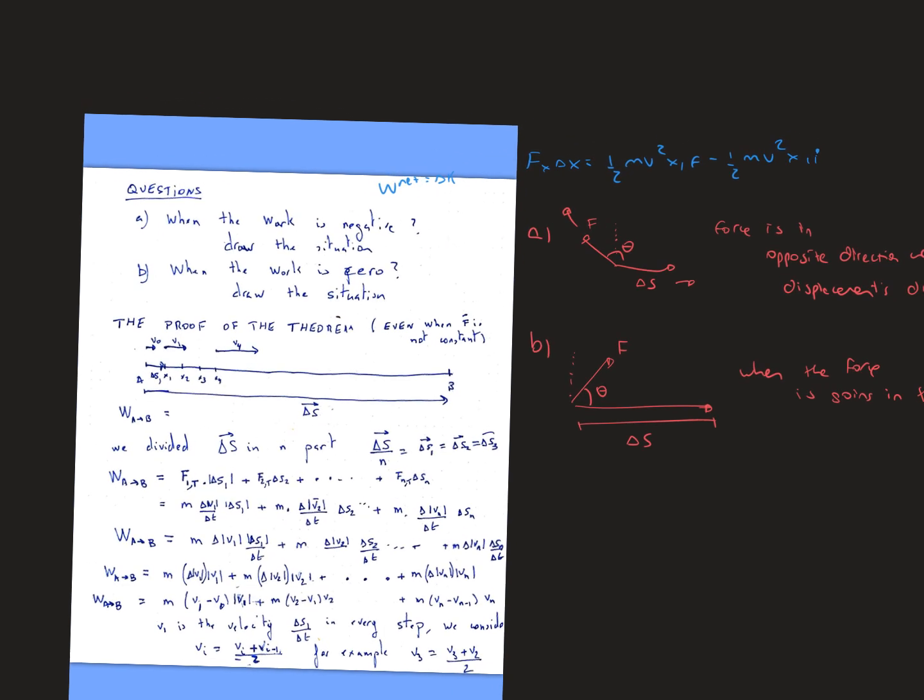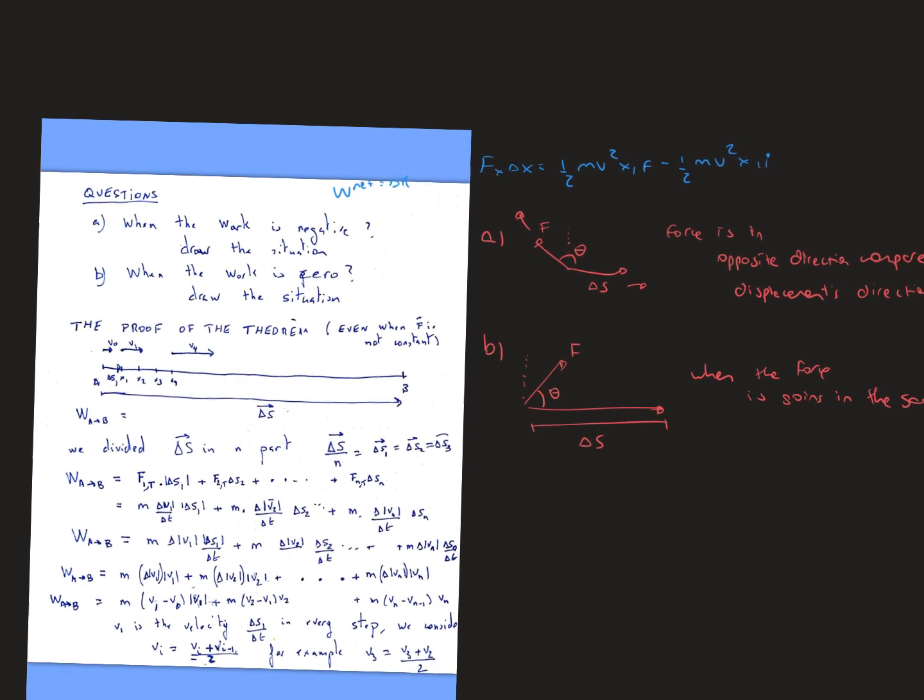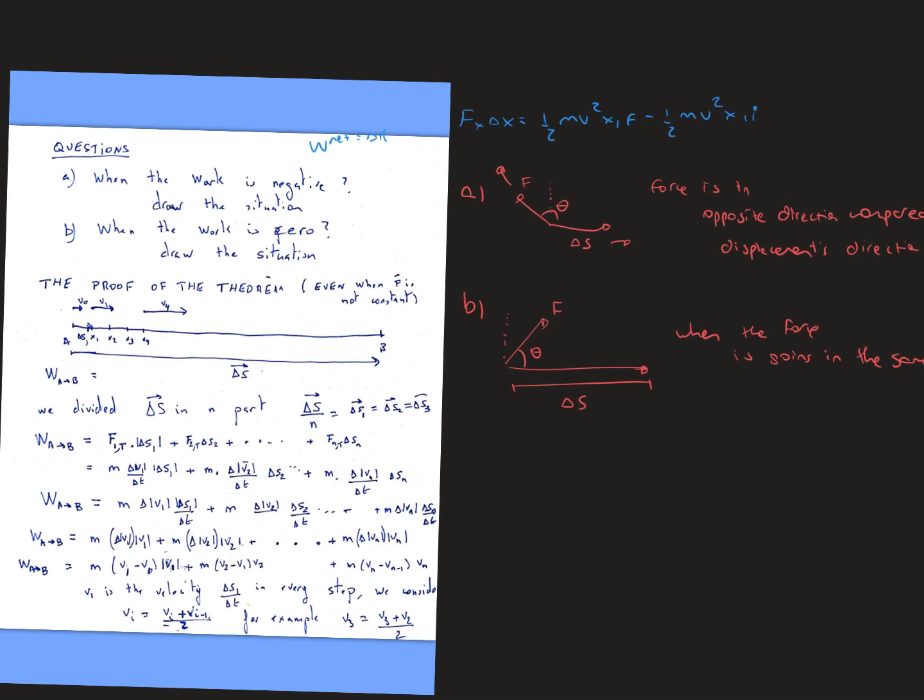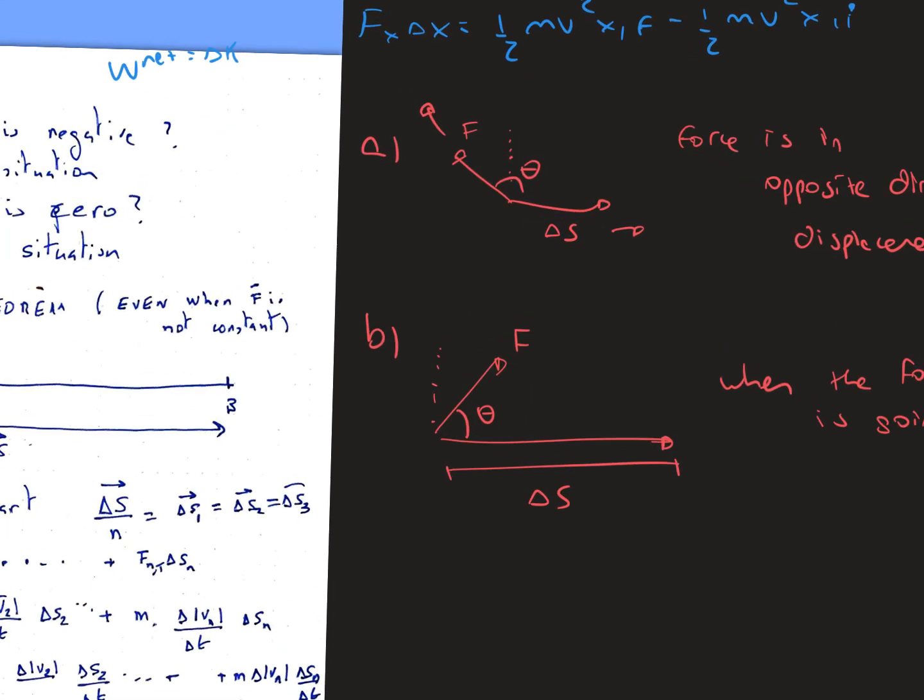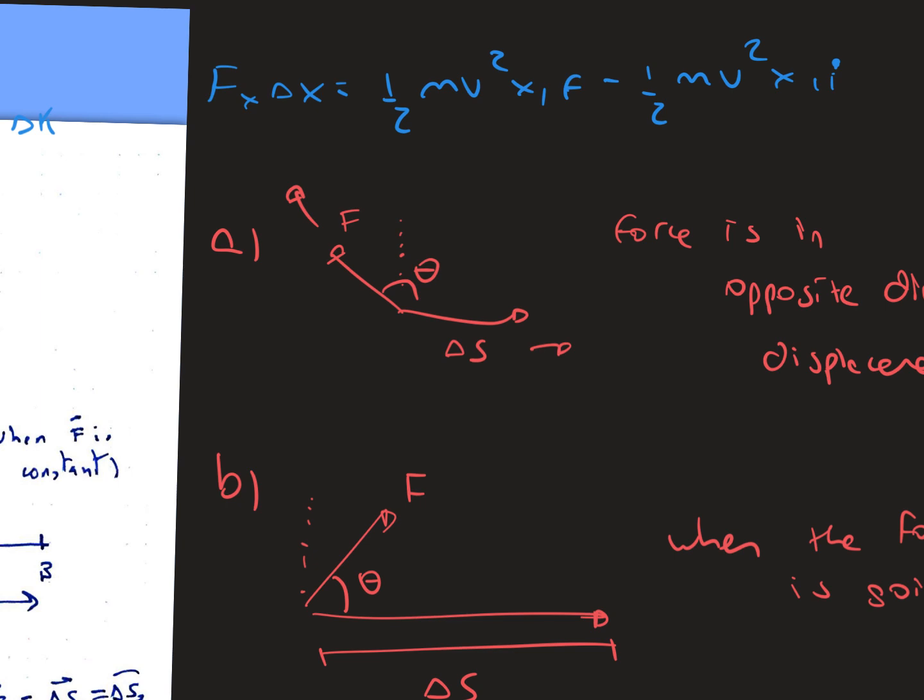So for this type of question we're asking when is the work negative, so we need to draw the situation. When the work is negative, the angle theta is going to be more than 90 degrees.